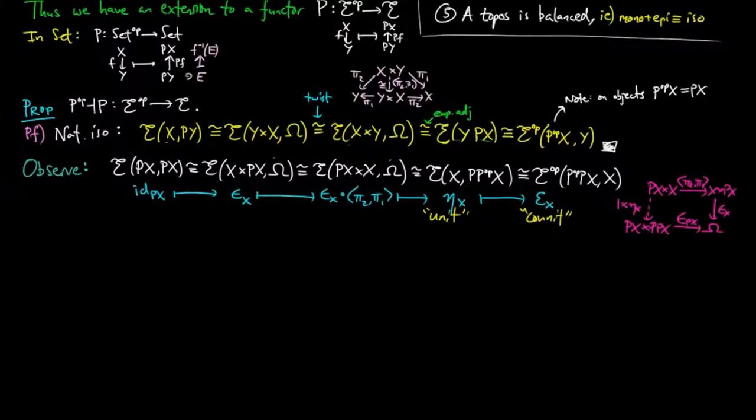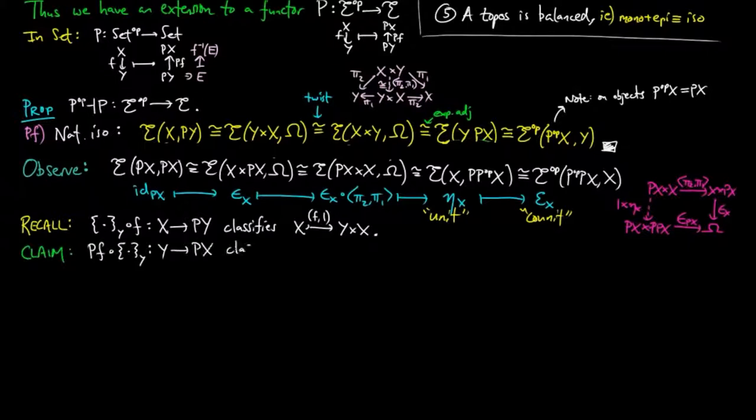We have shown in the video on the construction of exponentials in a topos that the singleton morphism on y classifies the sub-object given by the monomorphism f1. And we claim that P(f) composed with the singleton morphism on y classifies 1f. Or in other words, the natural isomorphism above takes the singleton morphism on y to P(f) composed with the singleton morphism on y.